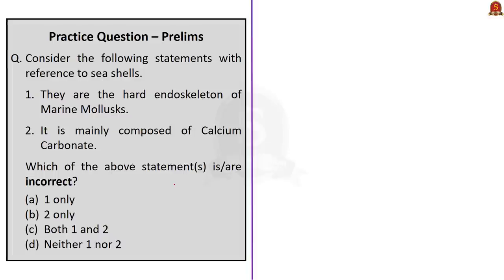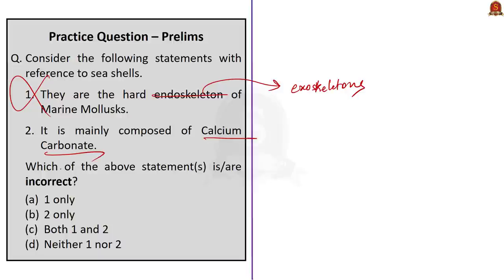The next question is based on seashells. Statement 1: they are the hard endoskeleton of marine mollusks — this is incorrect; seashells are exoskeletons, not endoskeletons. Statement 2: it is mainly composed of calcium carbonate — this statement is correct. Since the question asks for incorrect statements, the correct answer is option A: one only.